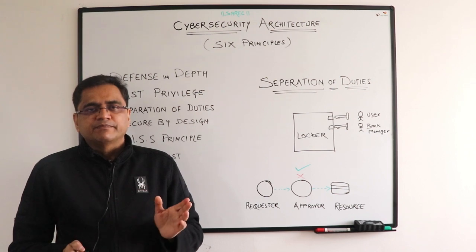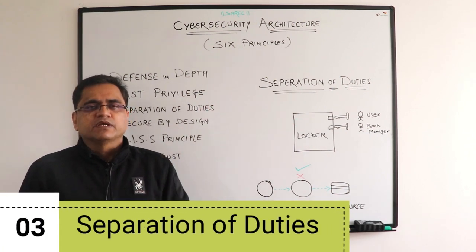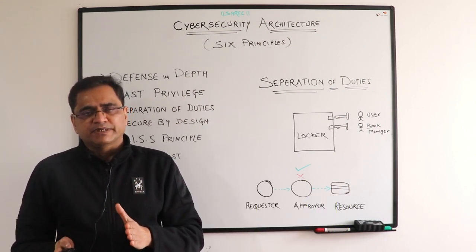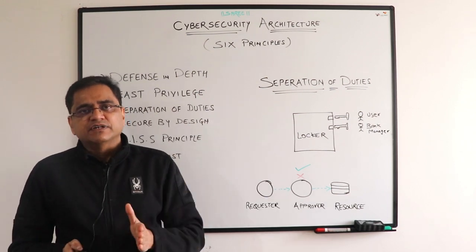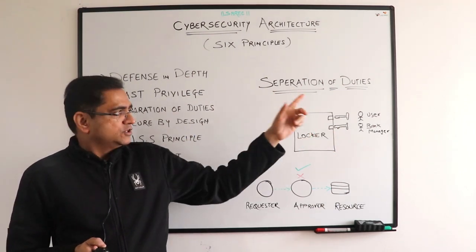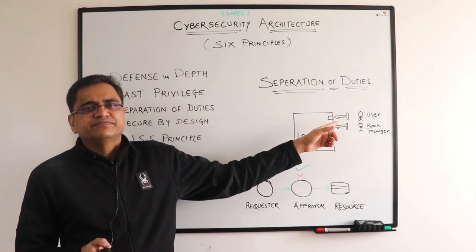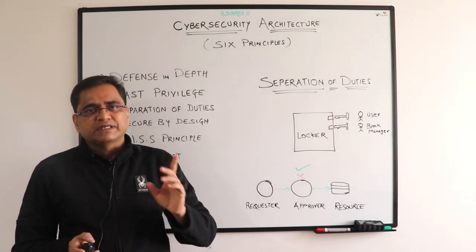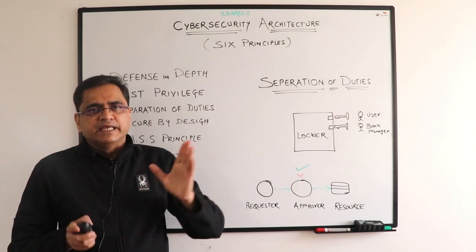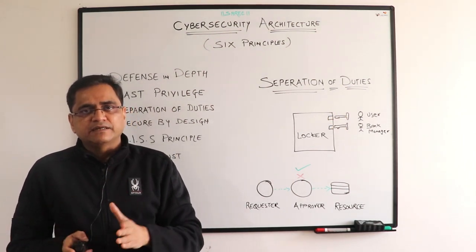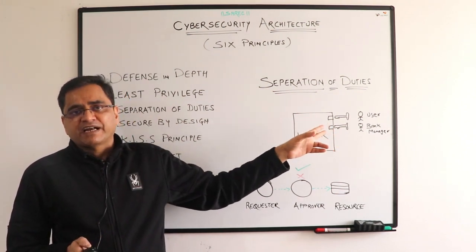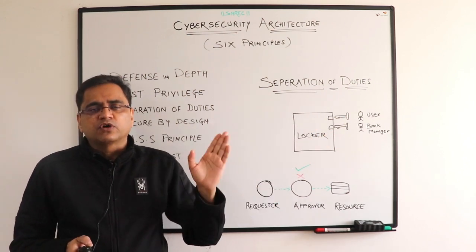Our third principle to keep in mind with cybersecurity is the notion of separation of duties. This means we won't have any single point of control — no single person can create a compromise. For example, in the physical world, imagine two people and a bank locker that only opens with two keys. One person has the first key, but even using his key alone, he still can't open the locker. He would need the bank manager with his key as well. Two of them cooperating can open the locker together. There is no single point of control — that is the separation of duties.